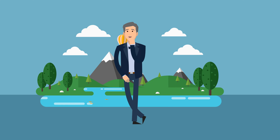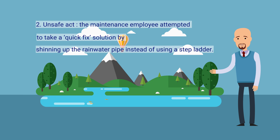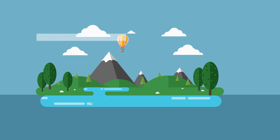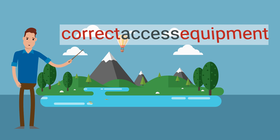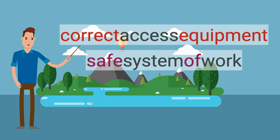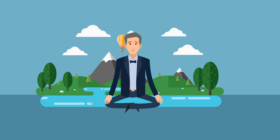The multiple causation approach would view this situation differently. 1. Unsafe condition — overflowing gutter, which should have been noted by maintenance employees during previous rainfall. 2. Unsafe act — the maintenance employee attempted to take a quick fix solution by shinning up the rainwater pipe instead of using a stepped ladder. 3. Cause — unsafe working practice due to the absence of a formal procedure for work at height. Under normal circumstances, the defect should have been noted and reported to the maintenance department. This action would have initiated a specific procedure for this task, including the provision of correct access equipment and a safe system of work, perhaps with a second employee securing the ladder during removal of debris by the first employee. The chances of being hurt are related to the various multi-causes identified, which may be both direct or indirect multi-causes.